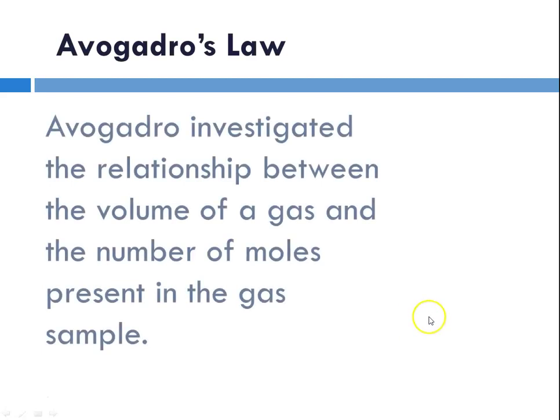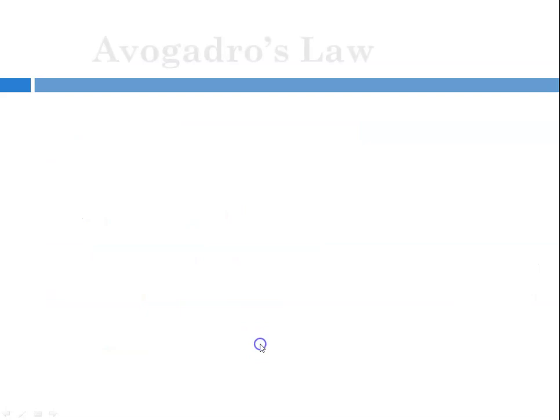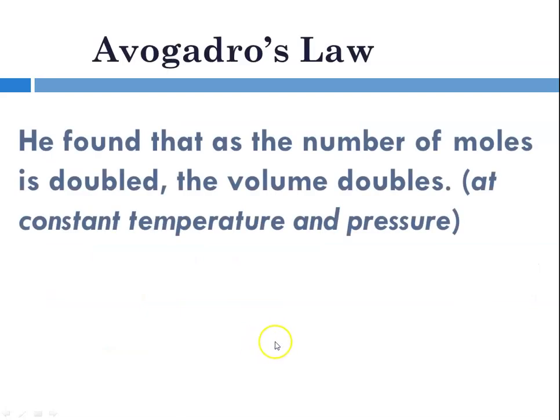But first we have to remember Avogadro. Remember that Avogadro was investigating the relationship between the volume of a gas and the number of particles, or the number of moles, present in a sample. Avogadro's law states that what he found was that as the number of moles is doubled, the volume doubles. If you triple the number of moles in a gas sample, the volume triples, and so forth.